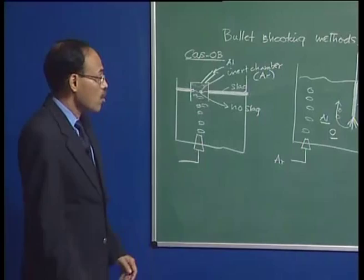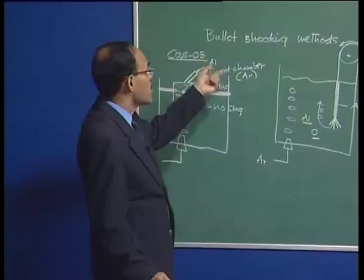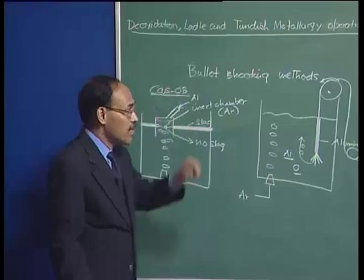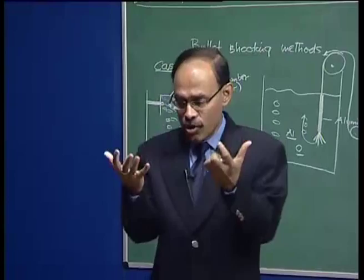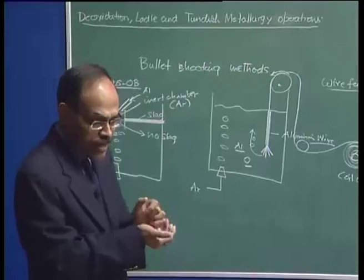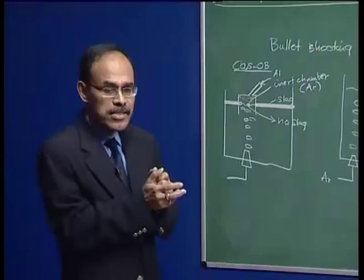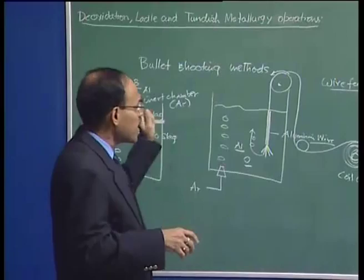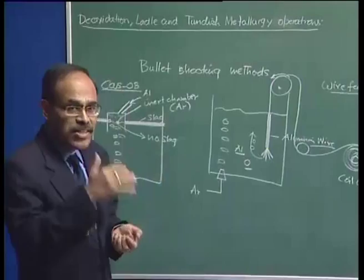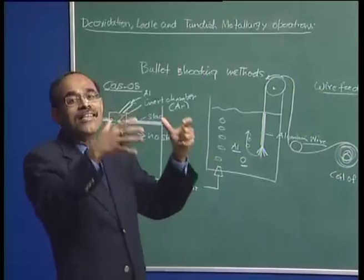Moving on to the second topic — ladle metallurgy. In primary steelmaking we produce crude steel containing many impurities; the duration of primary steelmaking varies from about 28 to 50 minutes depending on converter capacity. Secondary steelmaking or ladle metallurgy involves a variety of processes that begin once the ladle is filled with molten metal from the furnace.